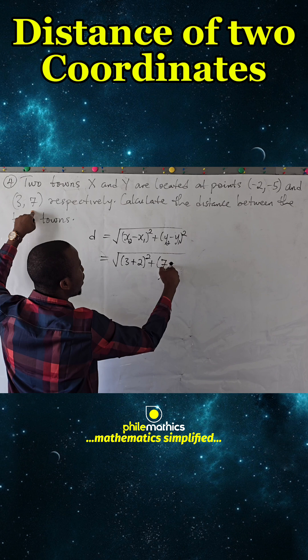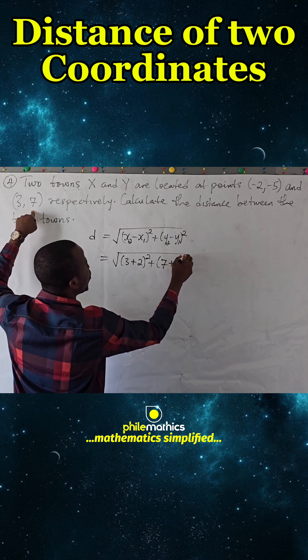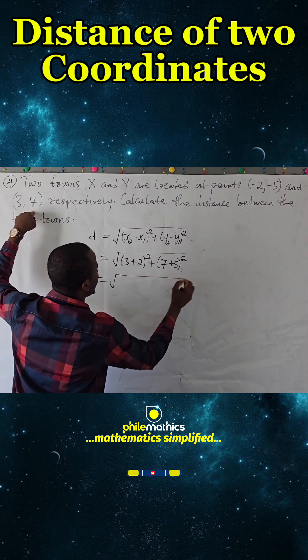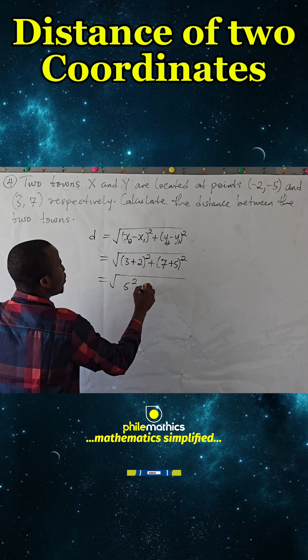And so 3 plus 2 is 5 squared. 7 plus 5 is 12 squared.